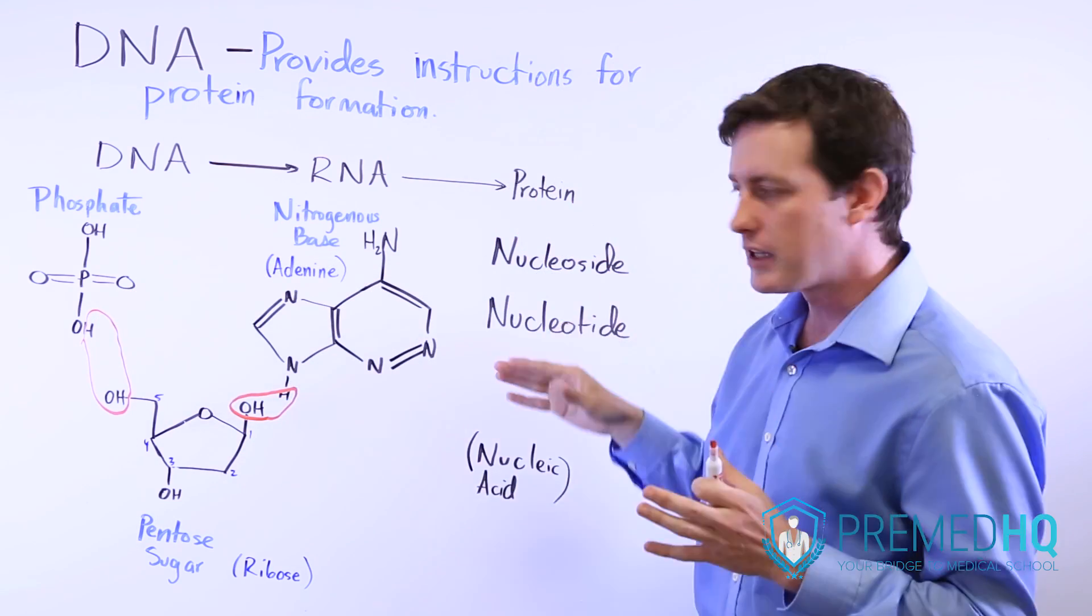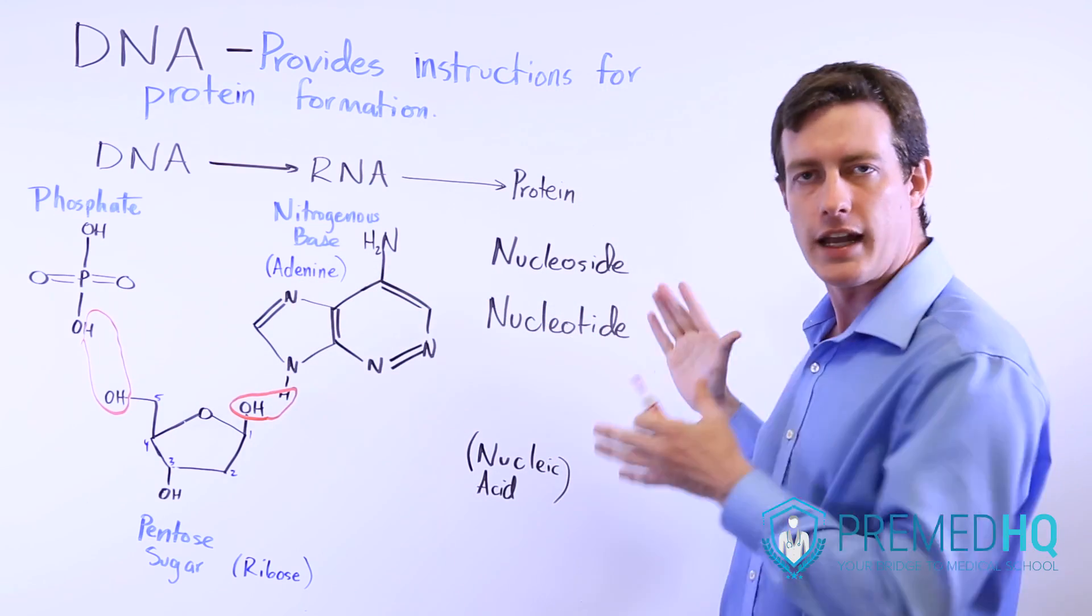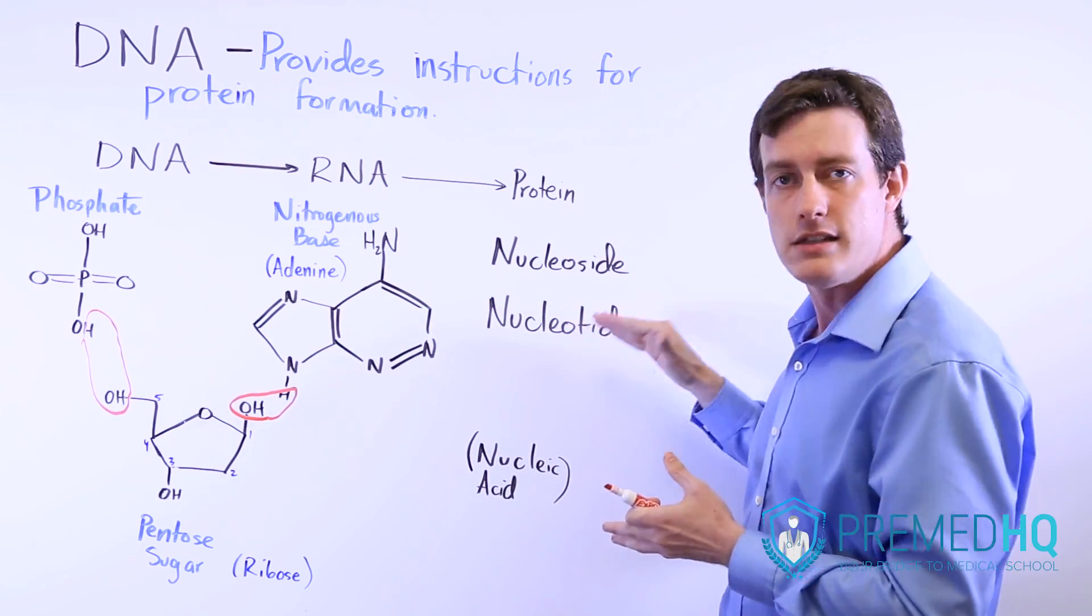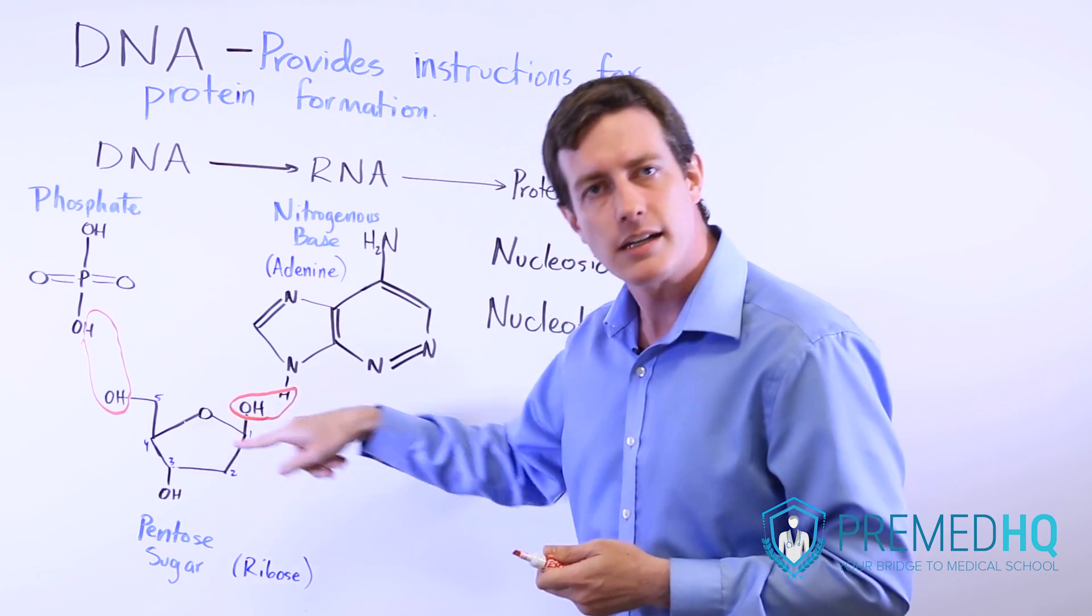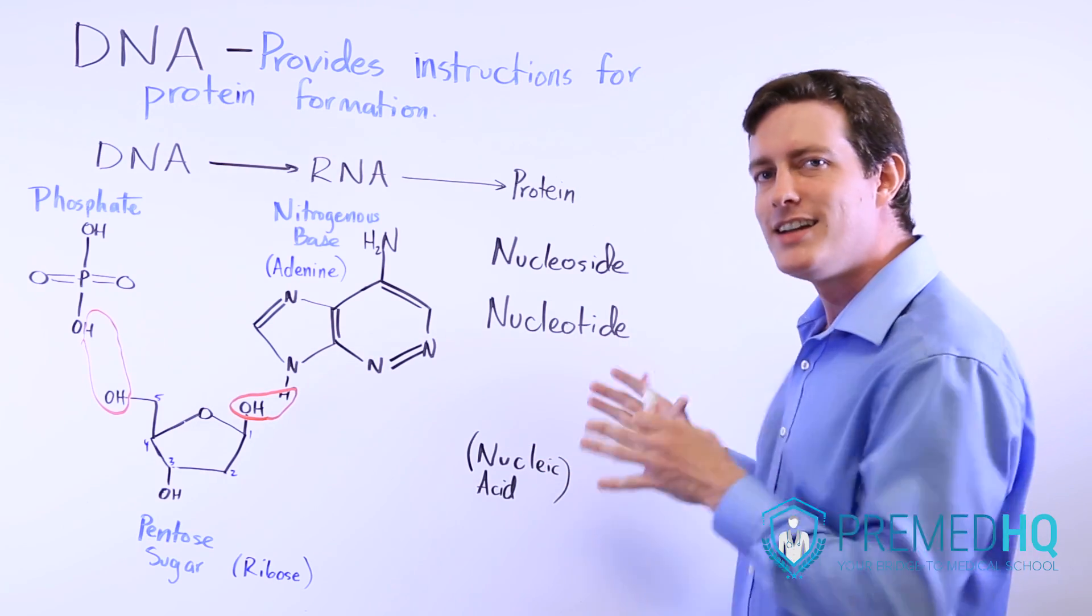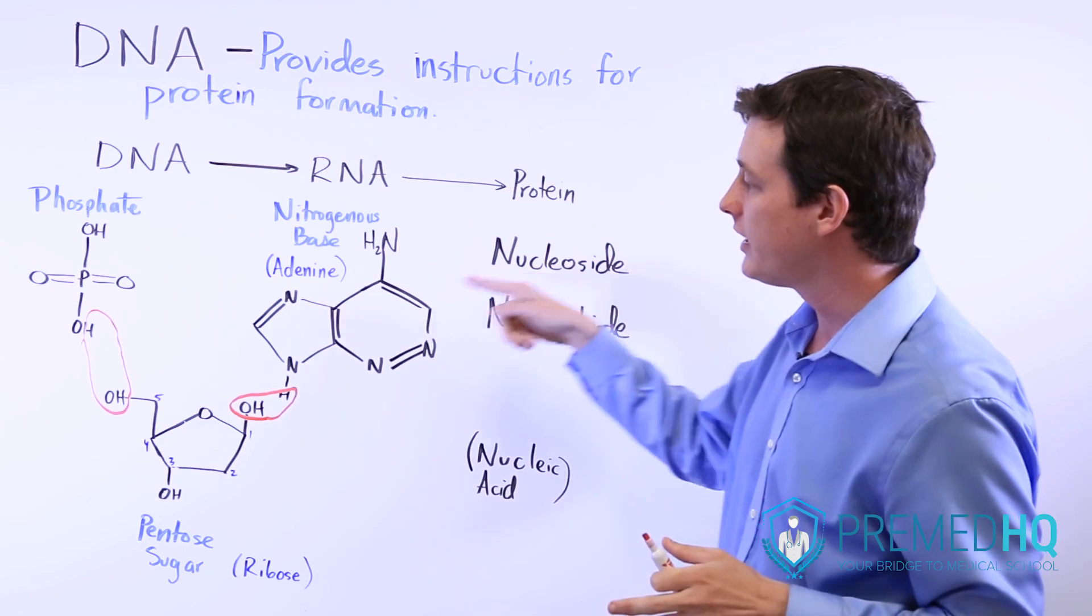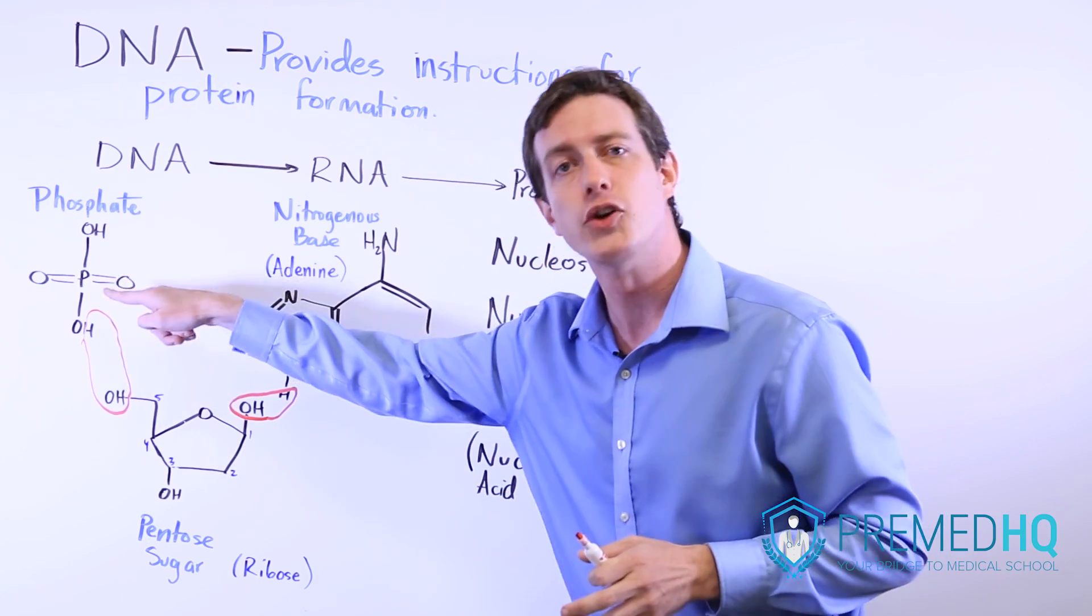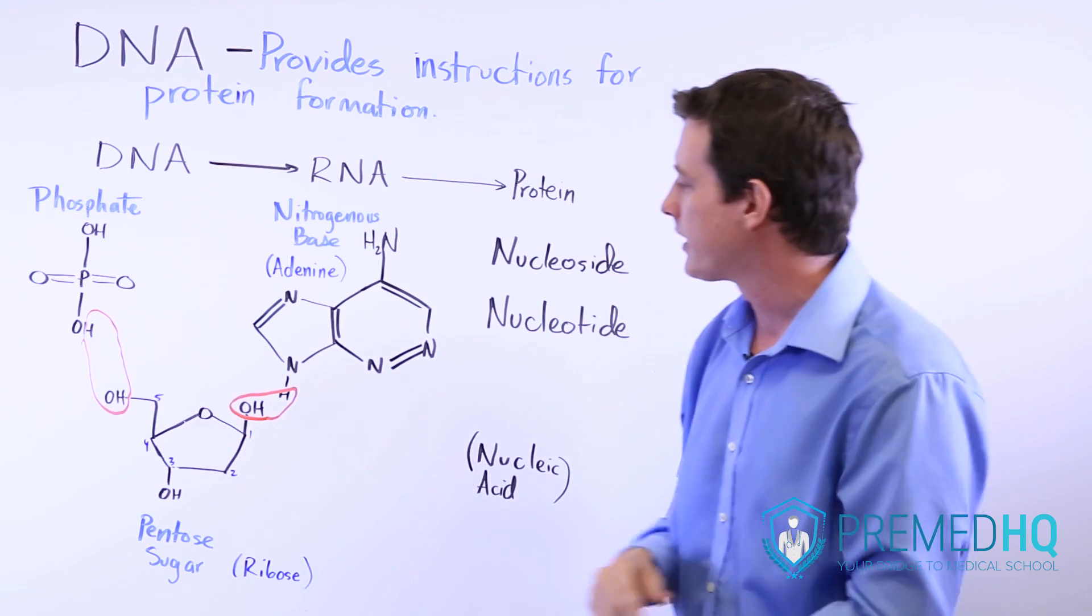A nucleotide is the nitrogenous base and it has a second and third component. Something that has a third component is a nucleotide. Third and tied both have T's in them. Something with only the nitrogenous base and a second component is the nucleoside. Second and side. A nucleotide has a first, second, and third component where a nucleoside only has a first and second component.